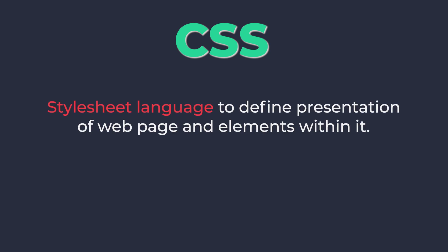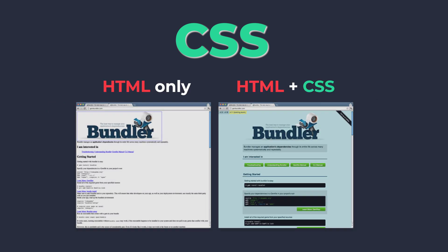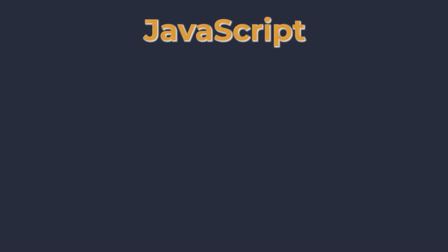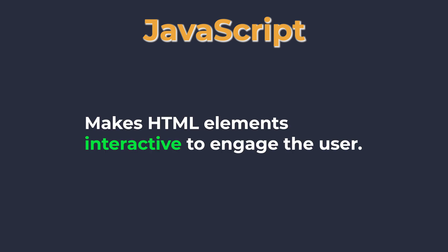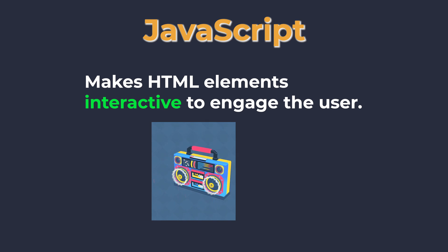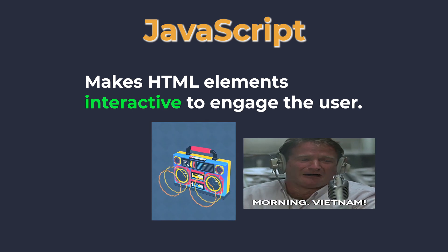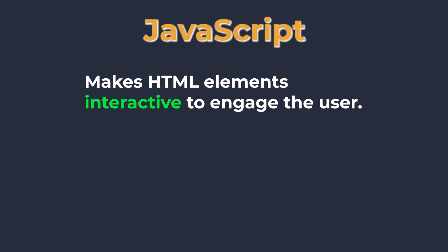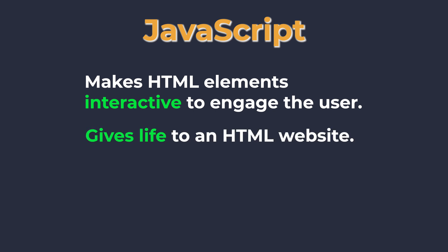CSS is a style sheet language used to describe the presentation of a webpage and elements within it — like font size, alignment, font color, background color, etc. Now, what does JavaScript do? Making a webpage user-interactive is done by JavaScript. A webpage with only HTML and CSS is like a radio — it is made only to broadcast, and you can only see the HTML elements with applied CSS styles. User interactions like those you see in current web pages are not possible without JavaScript.